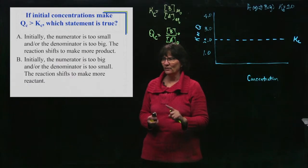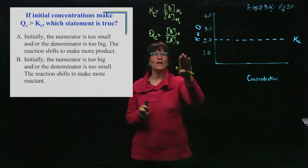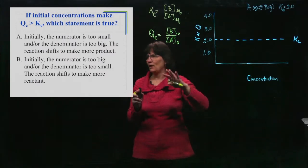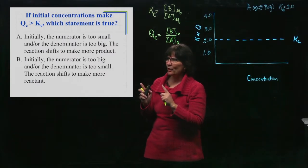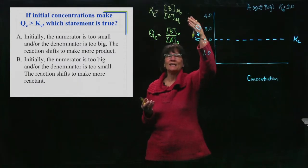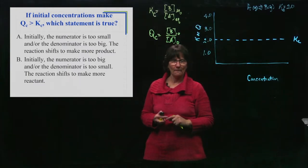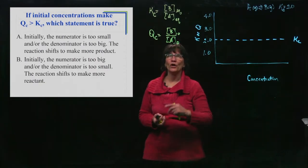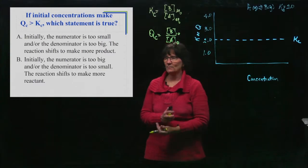Now I want you to think through this. Stop the video and think about what will happen to the numerator and the denominator. We've got a scenario here where Q is too big. It is not happy until it gets to K and Q is too big. So pick which one would be how you get from where it is to where it wants to be.